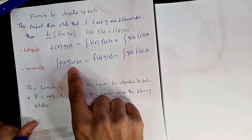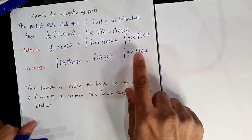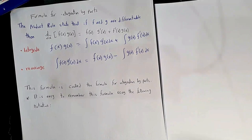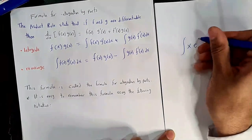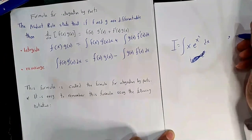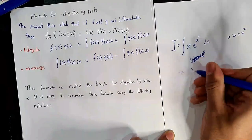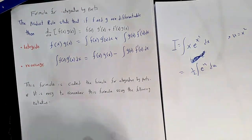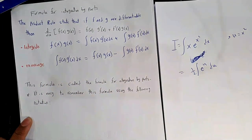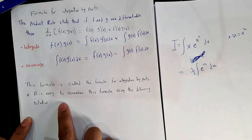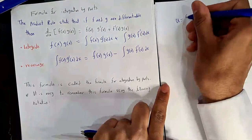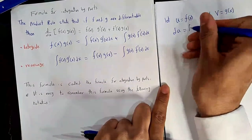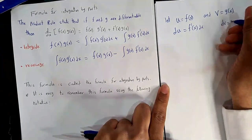This formula is called the formula for integration by parts. Notice: we started with an integral and end up with a new integral — hopefully easier than the original one. It is a similar idea to section 5.5 substitution. To make this formula easier to remember, we use the notation: let u = f(x) and v = g(x), so du = f′(x)dx and dv = g′(x)dx. The formula becomes: ∫u dv = uv − ∫v du.